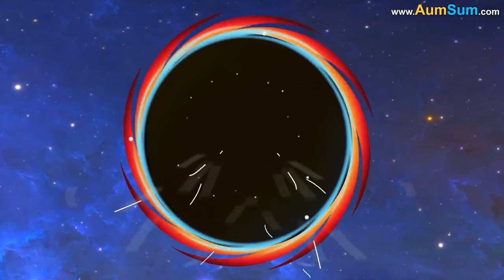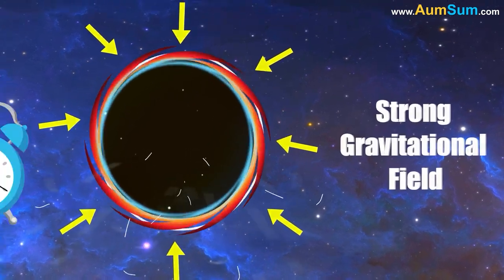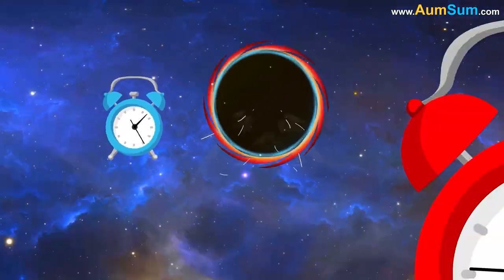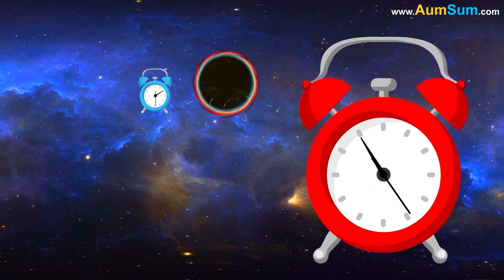Now, as a black hole has a very strong gravitational field, a clock near it will tick slower as compared to a clock which is far away from the black hole.